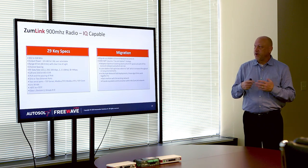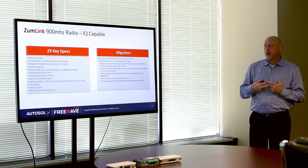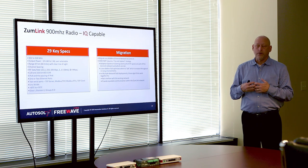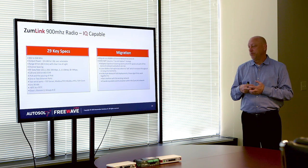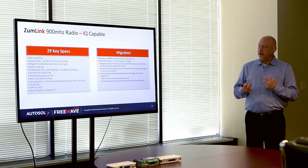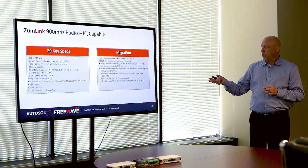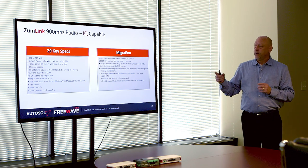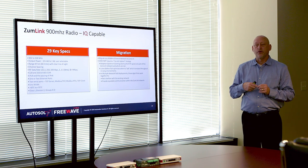Some key specifications: we're operating in the unlicensed 900 megahertz spectrum. Very temperature resilient — we have them deployed in deserts and at both poles, so we can do hot and cold. Class 1 Div 2. Two serial ports, able to run those various protocols. And on the 4-port version, you have an extra Ethernet port.